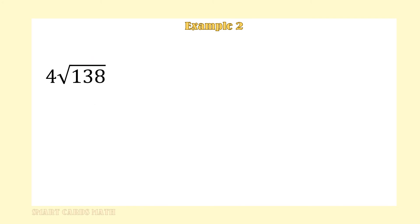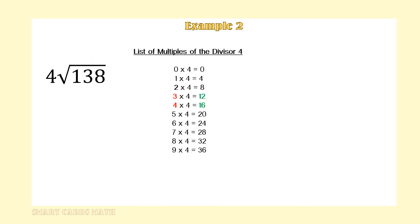138 divided by 4. Make a list of multiples of 4. Can we get a group of 4 out of 1? No. Can we get a group of 4 out of 13? Yes. How many groups of 4? Go to your list of multiples of 4 — we can get 3 groups of 4 out of 13. So 3 will be the first digit in the quotient.